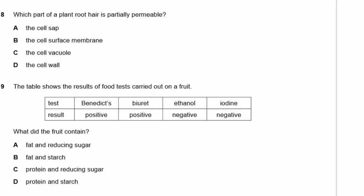Question 8: Which part of a plant root hair is partially permeable? The cell sap is completely permeable — nothing stops things from diffusing through. The cell surface membrane — yes, that is partially permeable. The cell wall is like a mesh and is completely permeable. The vacuole membrane exists but root hairs don't really need much of a vacuole. The answer is the cell surface membrane.